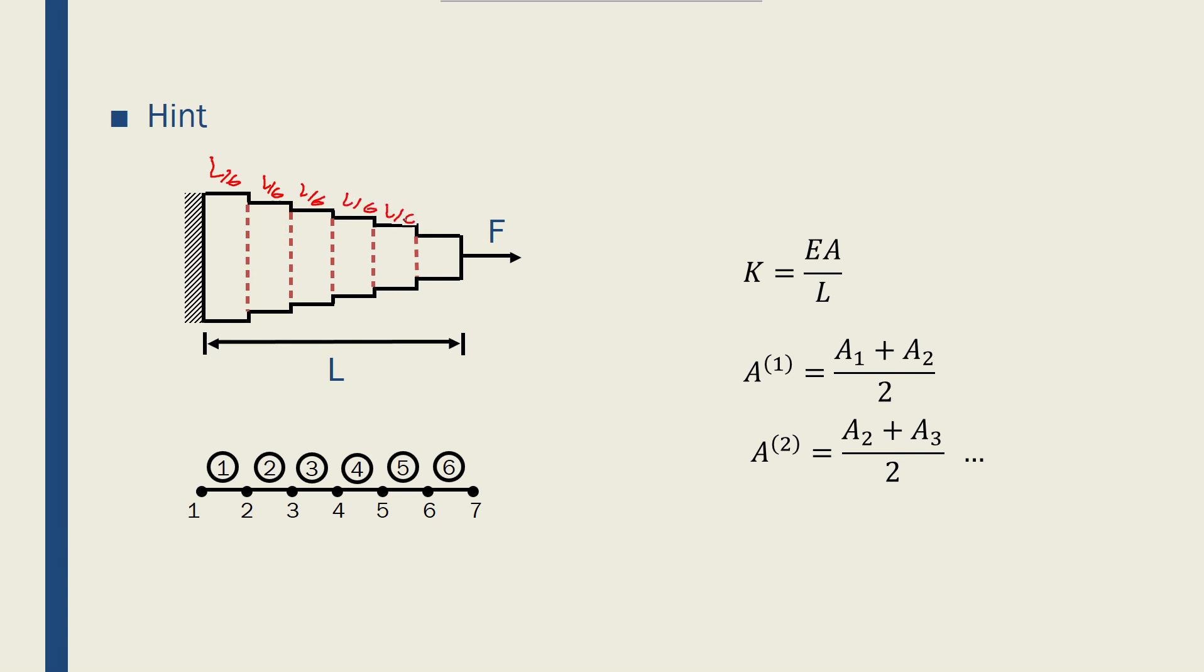Now I have A1, A2, let me actually rewrite them. This would be A1, this would be A2, and so on, and this would be A6 because I have 6 elements. But how do I find A1, A2, A3, A6?